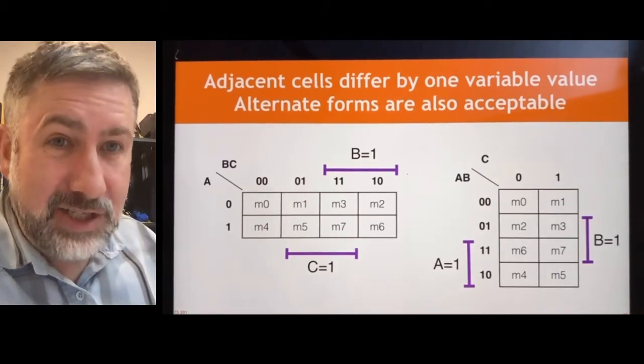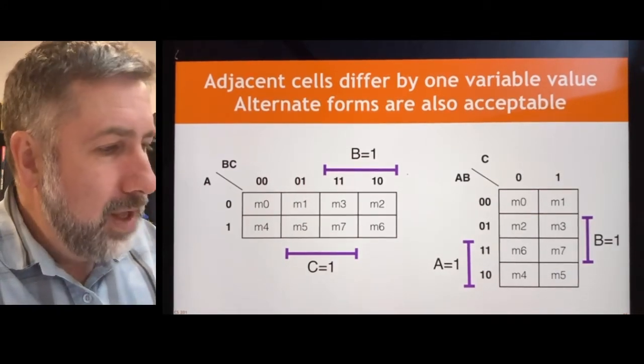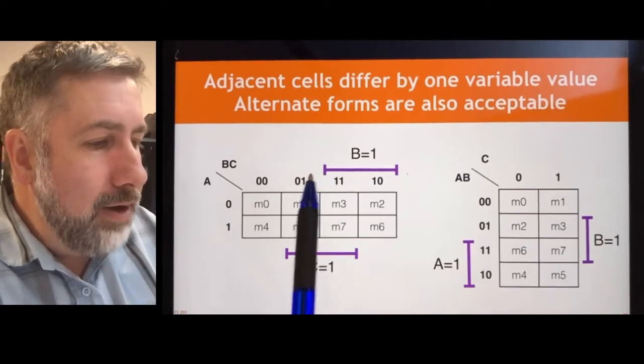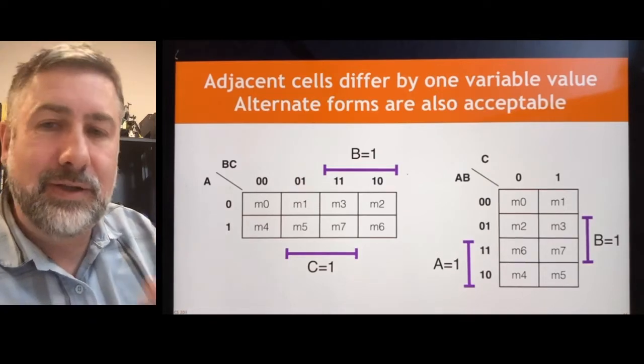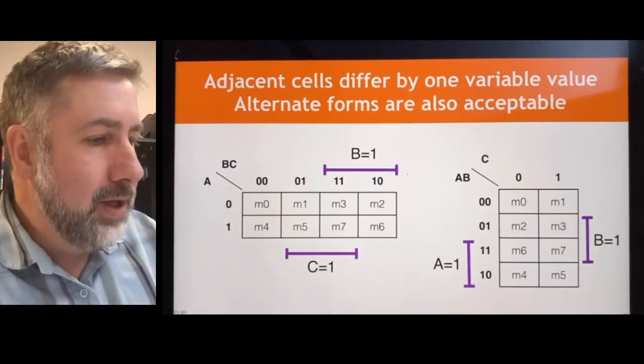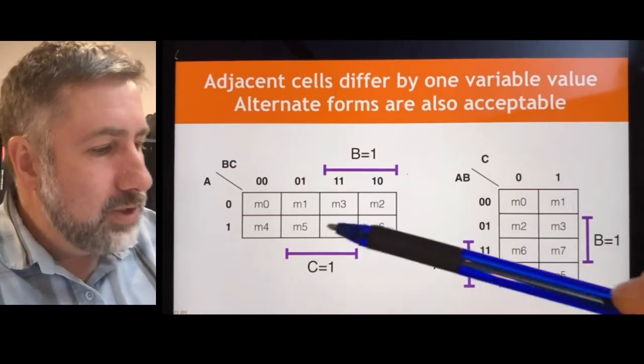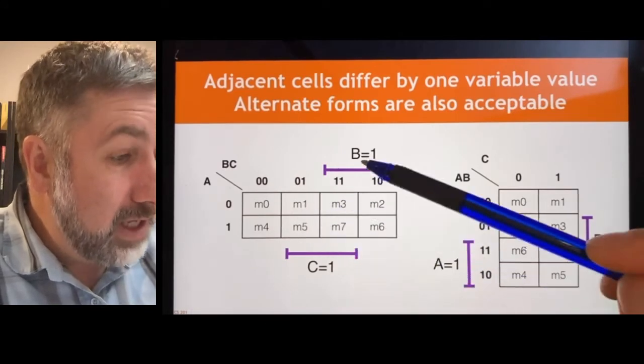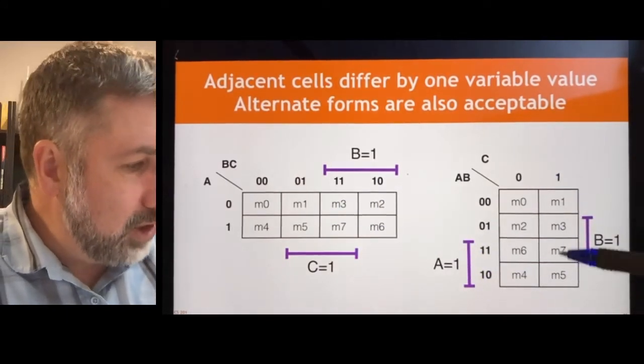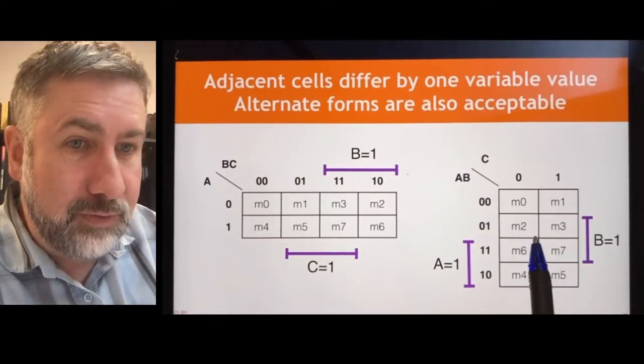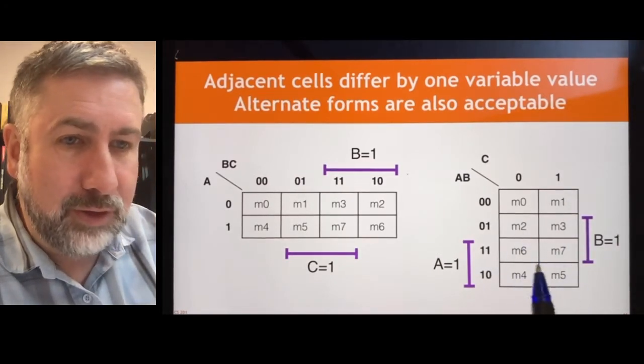Here's just restating adjacent cells differ by one variable. And we can list where each variable is positive or equal to 1 or in the positive form in its minterm. A is 1 here. C is 1 for all four of these. And B is 1 for all four of these. And again, vertically, C is 1 for all four of these. B is 1 for all four of these. And A is 1 for all four of these.